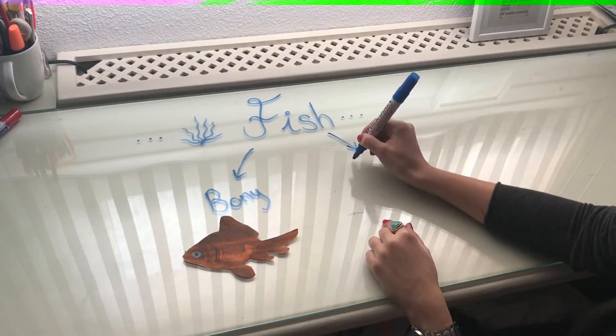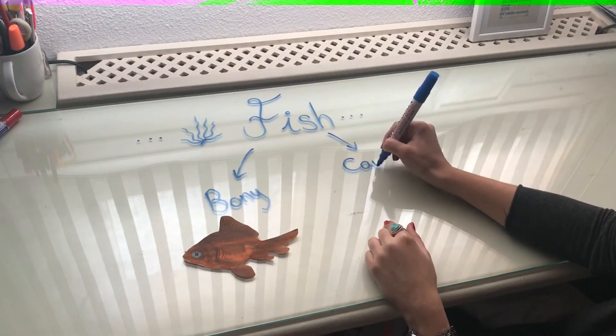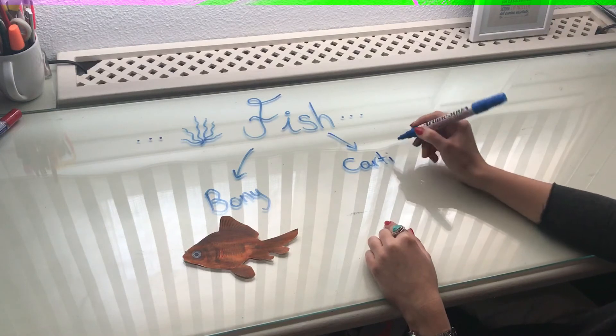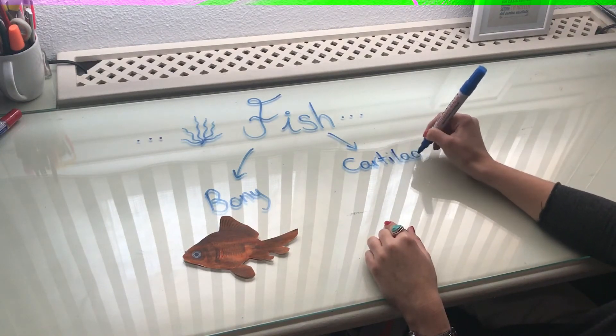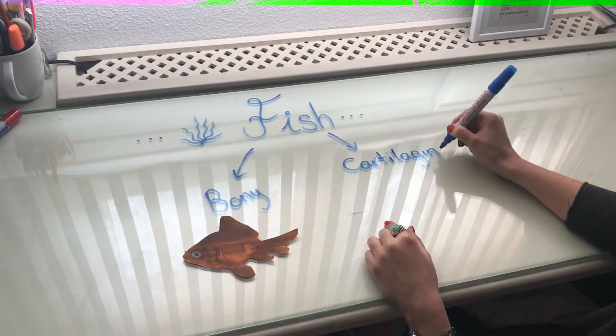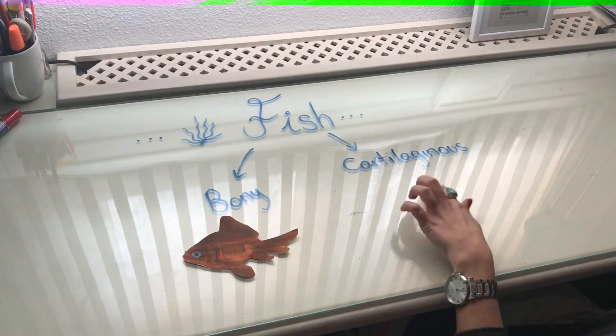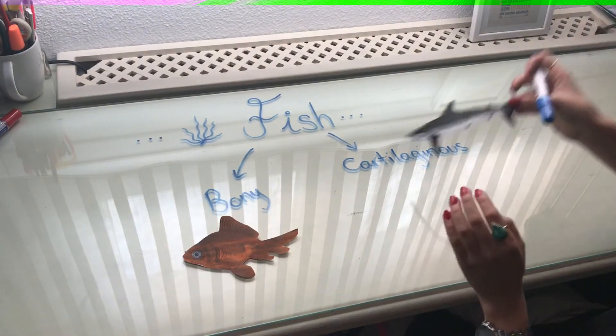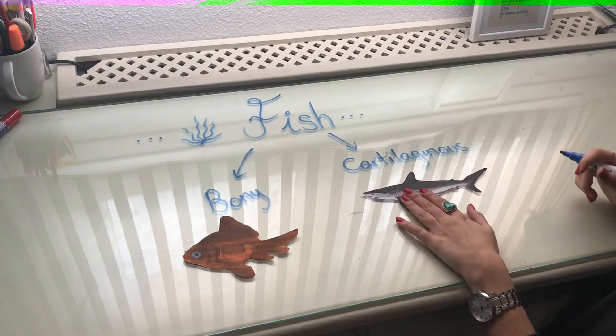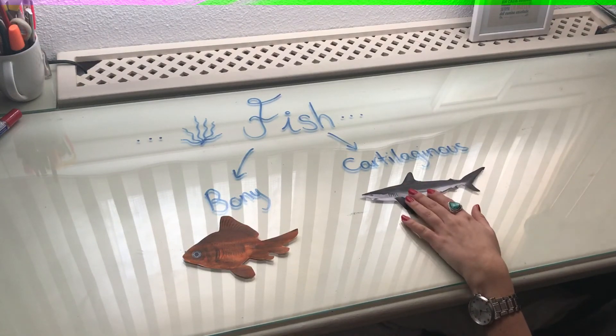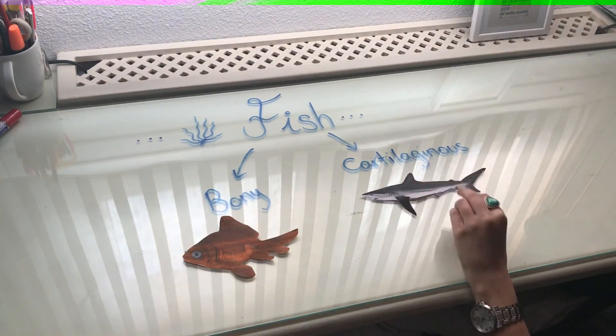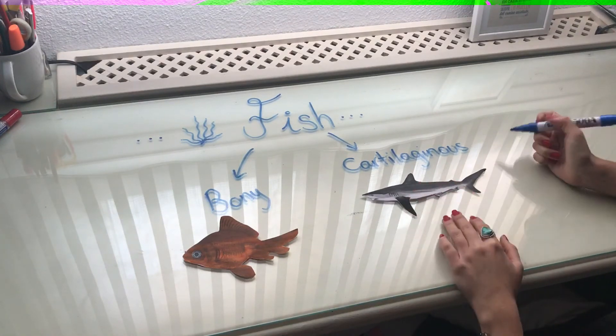And then we have the cartilaginous fishes. Be careful because this is a very long word. Cartilaginous. This type of fishes we can find, for example, sharks. These fishes have bones. Their bones are softer and flexible.